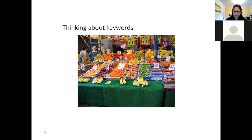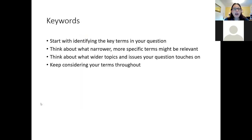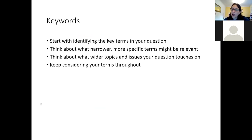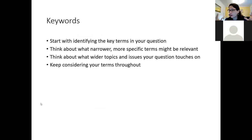To summarise: start with the key terms in your question. Think about the narrower and more specific terms that might be relevant, and also think about the wider issues and topics. Whether you need to go narrower or wider will depend on the structure of the question and the results you're getting — and that also feeds into the evaluation in your research record: am I too focused, am I too broad, how can I narrow or broaden this?